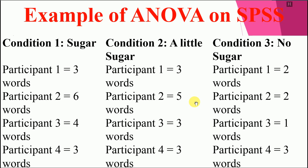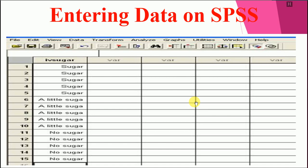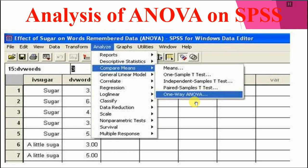Condition one is sugar — you can see that people in that group remembered the most words, which means that people who consumed more sugar had faster memory recall, and this is proved here. The null hypothesis for this study is to explore the effect of sugar on memory for words, and the null hypothesis states: there is no statistically significant impact of sugar on memory for words. We have data entered for three groups: sugar, little sugar, and no sugar.